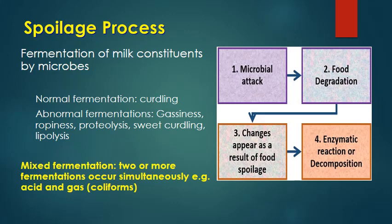The spoilage process in milk involves fermentation due to microbes. Milk constituents get broken because of microbial activity or microbial enzymes, especially with lactic acid formation. Microbes utilize lactose as an energy source and produce lactic acid, leading to curdling when acid levels are high. There can also be abnormal fermentation producing gassiness or ropiness. Different microbes break proteins causing proteolysis, or break lipids causing lipolysis. Sometimes sweet curdling occurs without acid production.